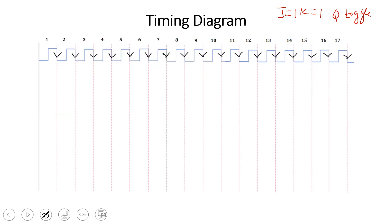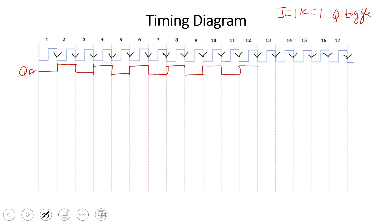First, the flip-flops start with a clear signal, so all flip-flops reset to state 0 — meaning QA, QB, QC, QD are all 0. QA receives the external clock pulse. When clock pulse goes from 1 to 0, QA toggles. It keeps toggling with each clock pulse. With 16 states, this counts from 15 to 0 correctly.